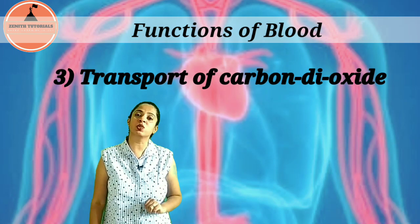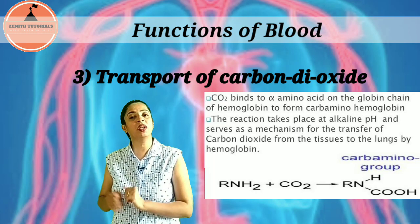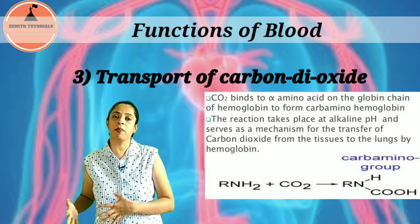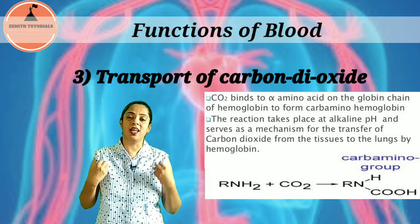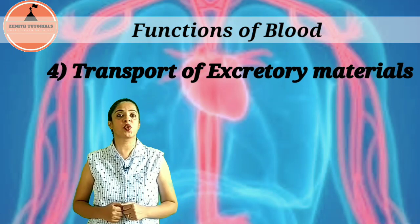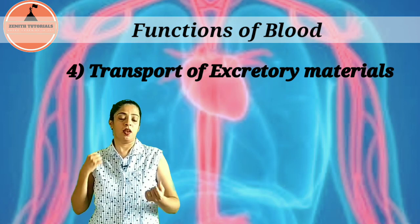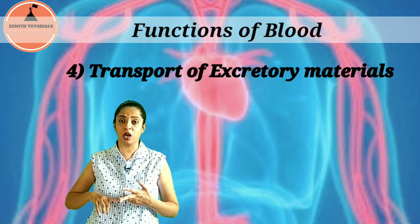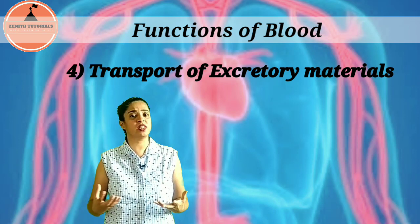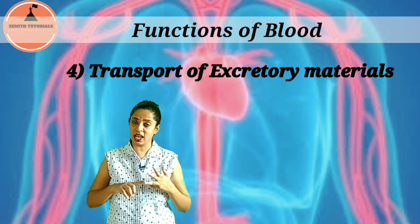The third transport function is transportation of carbon dioxide. Where carbon dioxide is in excess in tissues, hemoglobin combines with it to form carbaminohemoglobin. This compound travels through the blood, then breaks up and releases CO₂, which is expelled through the lungs. Fourth is transport of excretory material — waste substances like salts, excess water, and urea are carried from the tissues to the liver, kidneys, and skin and expelled out.